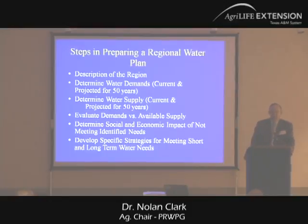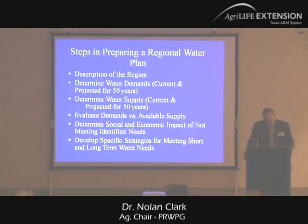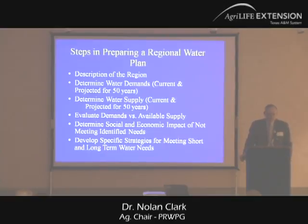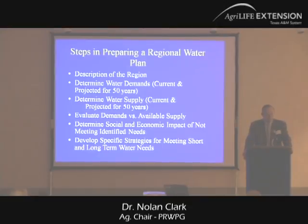Some of the steps we have to go through were written into the law, and the Water Development Board gives us specific requirements. Sometimes we'd like to venture off, but they keep bringing us back to these requirements. First, we have to describe the region in terms of population, topography, soils, and other characteristics. Then we have to determine current water demands and project those water demands out 50 years — for all individual water user groups.